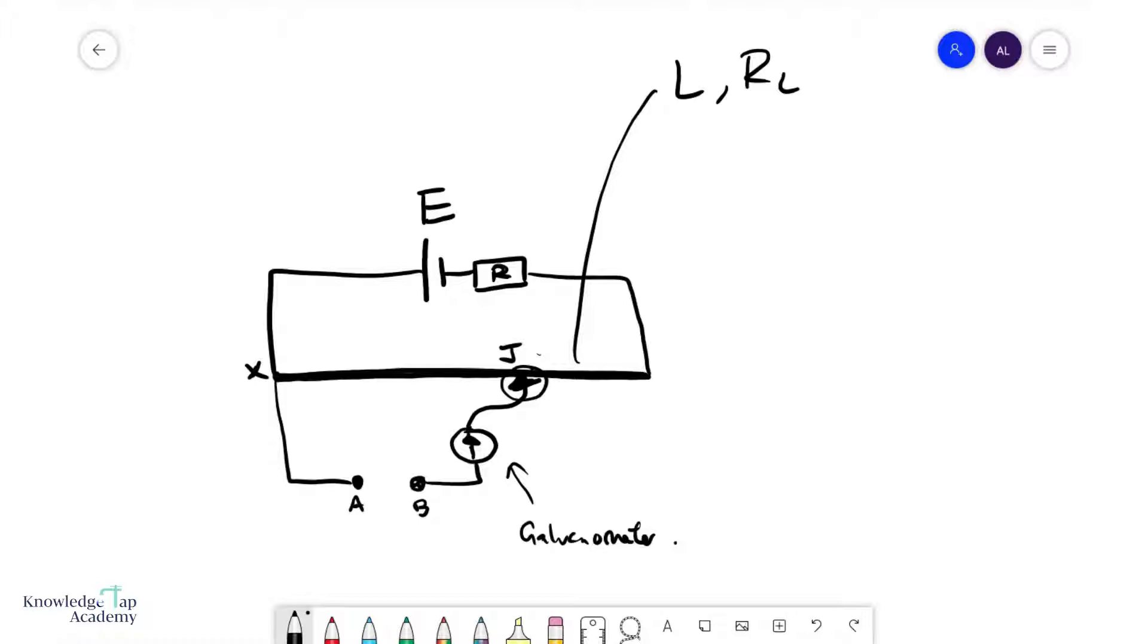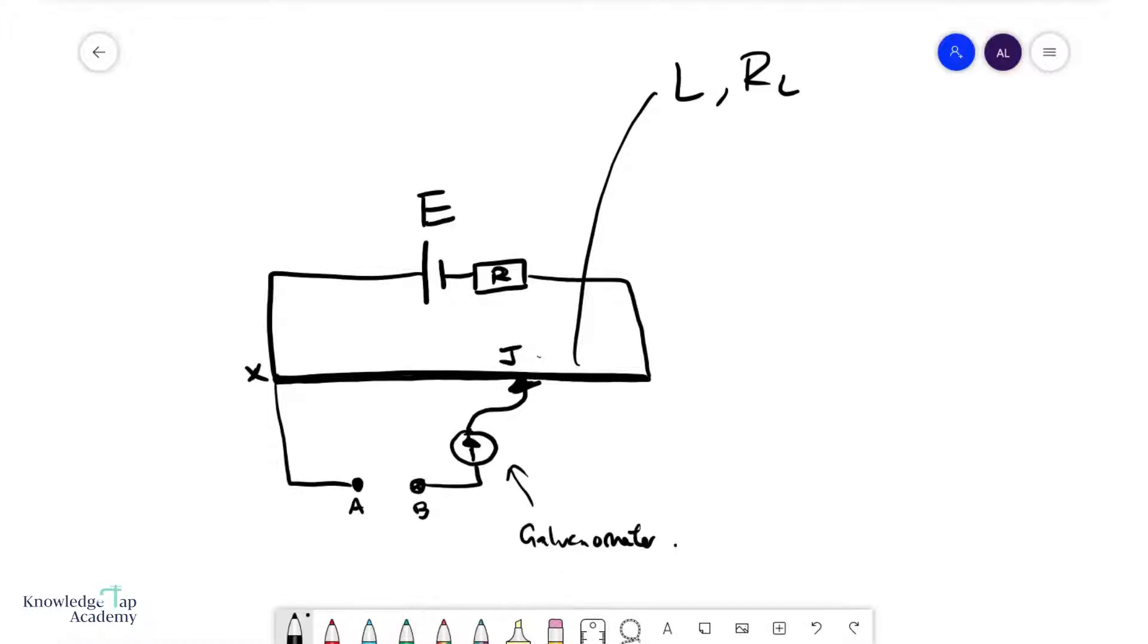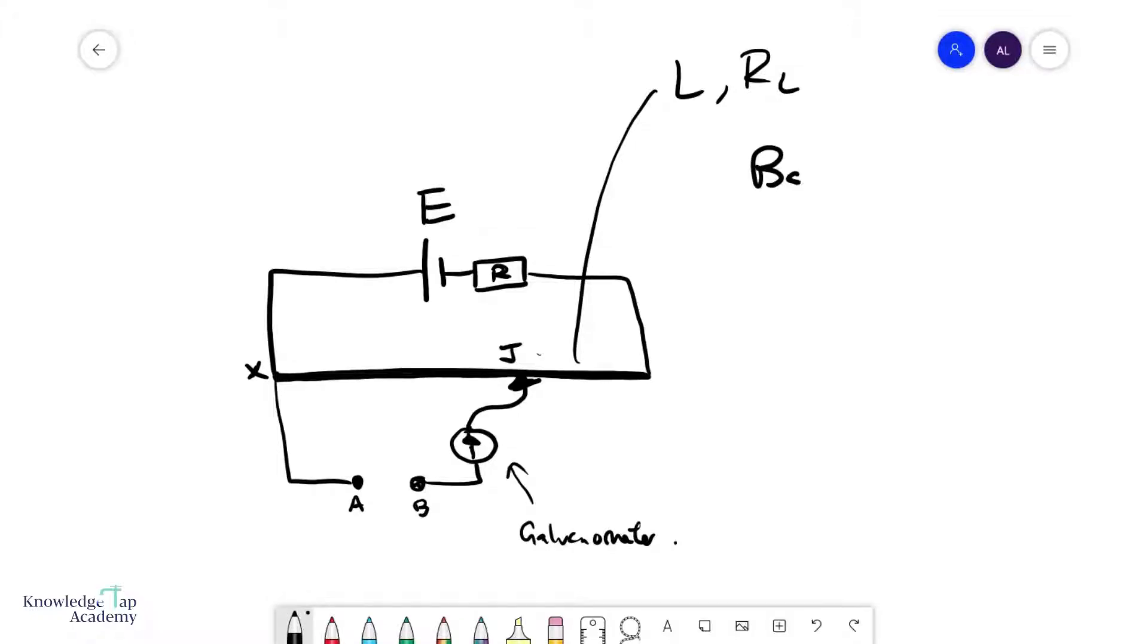When we use a potential meter we are always trying to look for something called the balance point. I'm going to take this pointer, this movable contact, and move it left and right until my galvanometer shows what we call a null deflection.